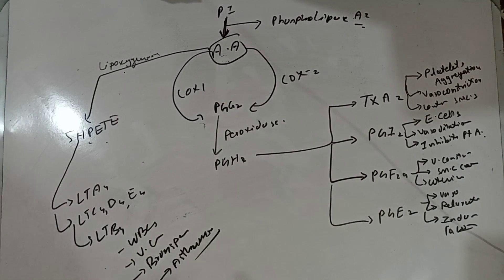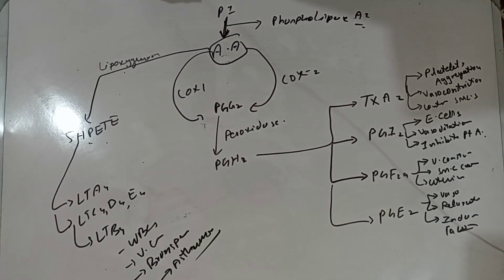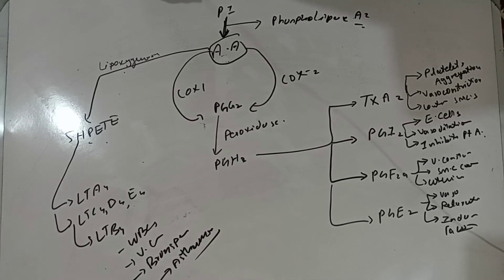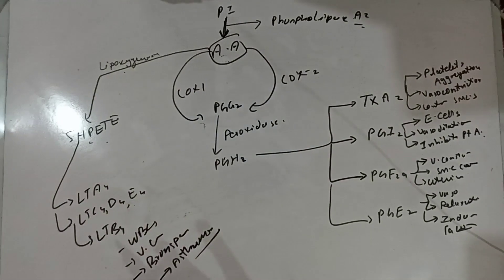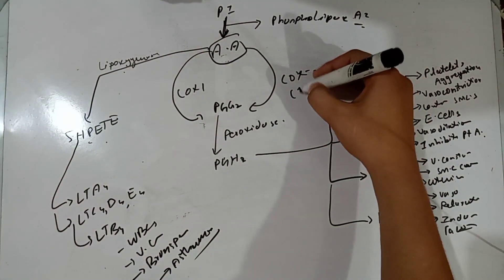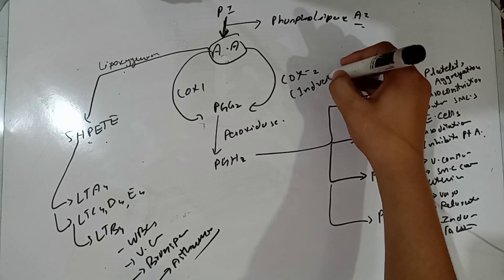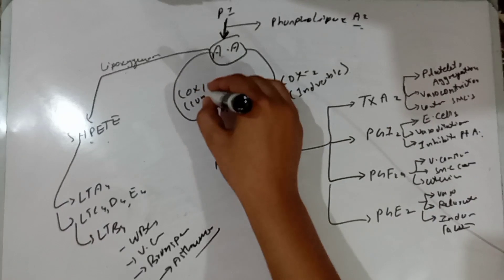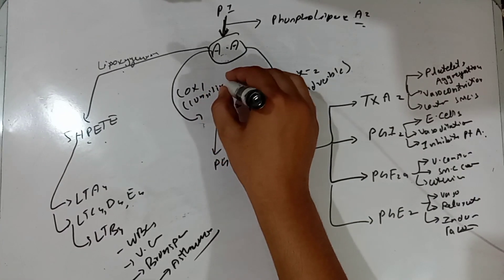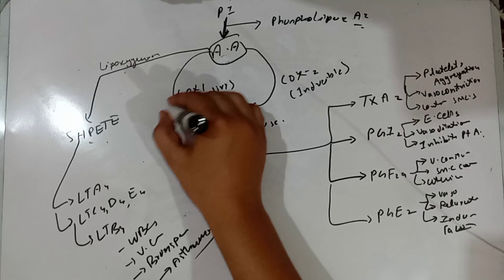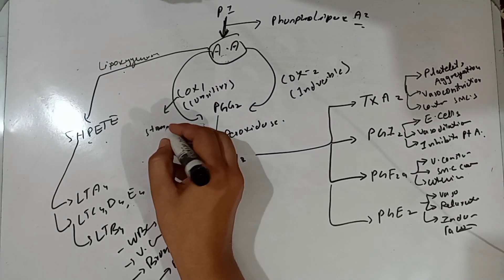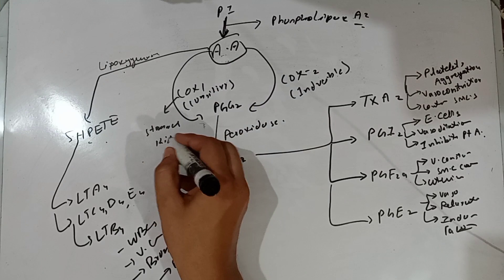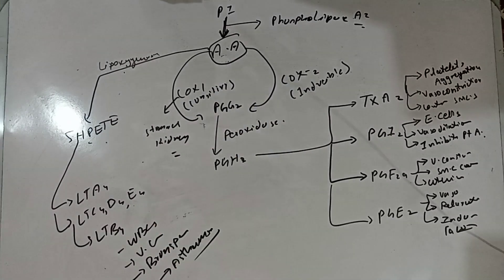COX-1 is constitutively present in most tissues and is required for the proper functioning of the stomach and kidneys. COX-2 is the inducible form and is involved in the pathophysiology of inflammation.